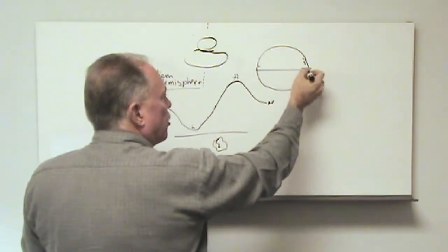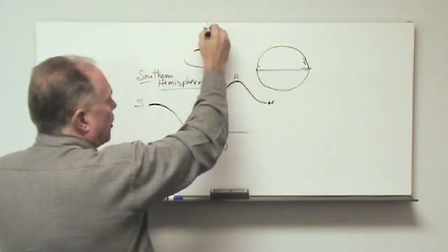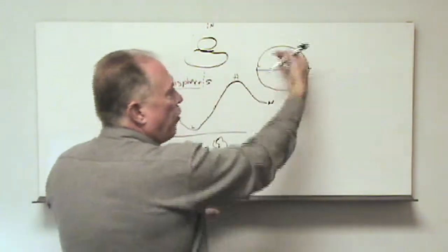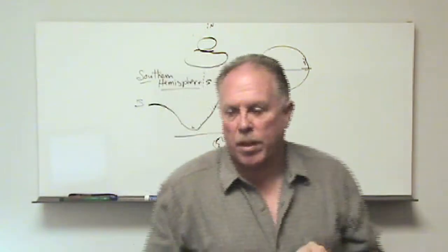So all of the discussions that we had regarding the shape of the anomalies, this is north, this is south, are flipped for the southern hemisphere. I just wanted to make that point.